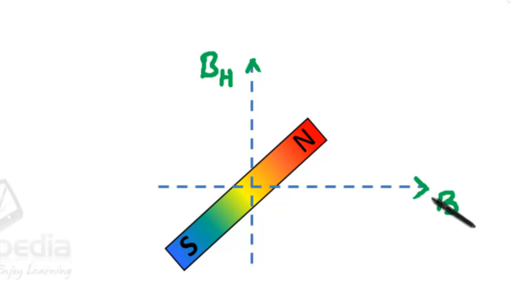B and BH are at right angles to each other. This bar magnet which is freely suspended comes to rest at an angle theta. This is theta.